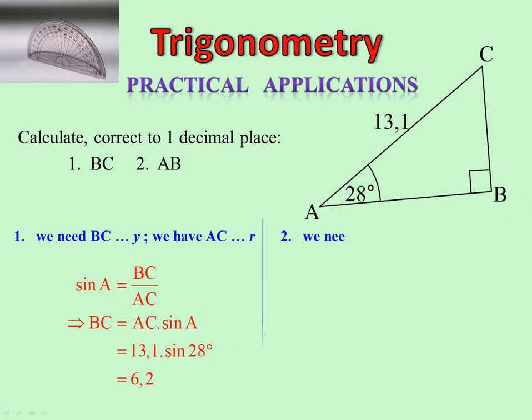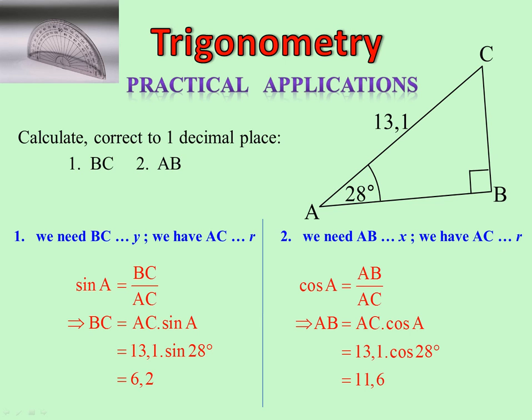To find AB. We need AB, X, so we need AB, that's the X, we have AC with the R. Which trig ratio represents X and R? Cos. So therefore we'll write cos of A equals AB over AC. Multiply up by the AC, put in your values, and there's your answer.